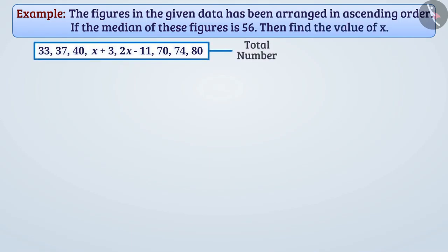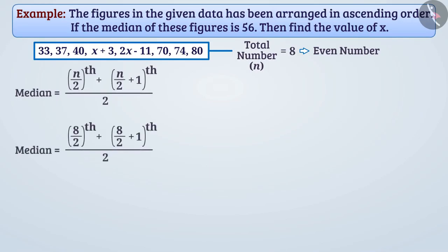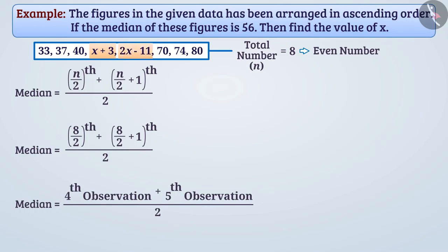The total number of observations in the data shown is 8, which is an even number. We know that if the number of observations n is even, then median is the mean of n/2 and (n/2)+1. Therefore, here the mean of the 4th and 5th observation is the median. The 4th observation is x+3 and the 5th is 2x-11.